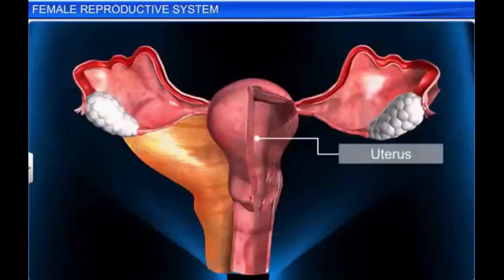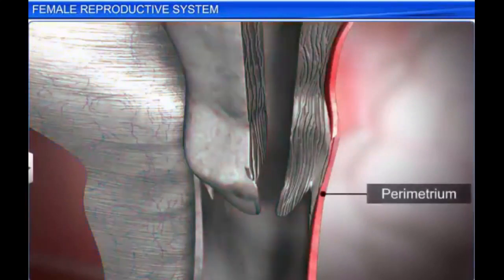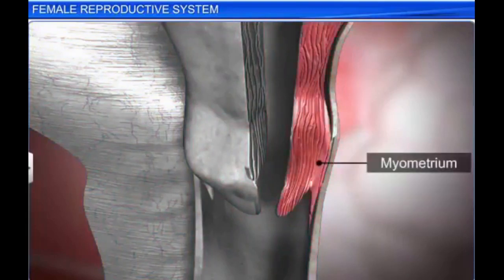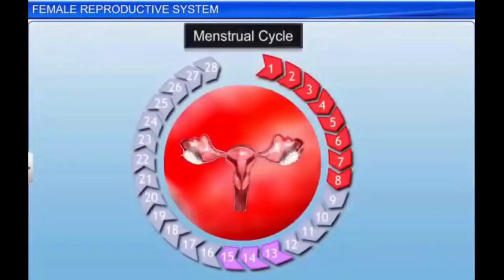The wall of the uterus is composed of 3 layers of tissues. The outer thin membranous layer is called the perimetrium. The middle thick layer of smooth muscle is called the myometrium, and it helps during delivery by producing strong contraction motions. The inner glandular layer is called the endometrium, and it undergoes cyclical changes during the menstrual cycle.